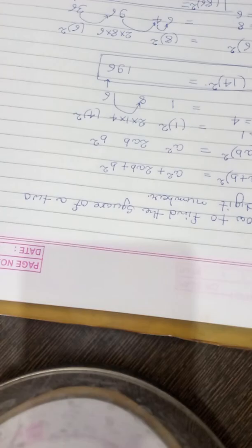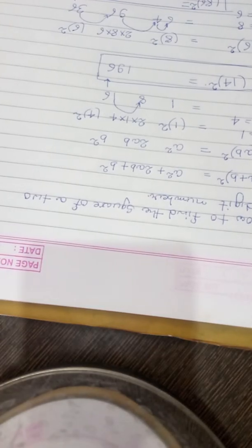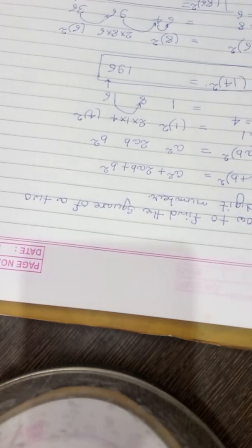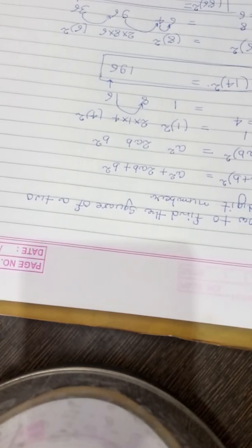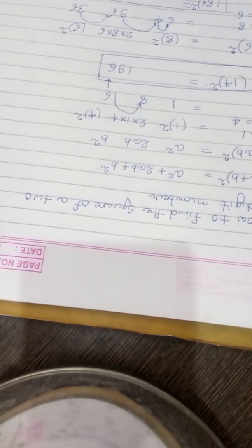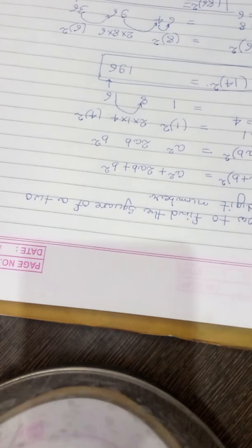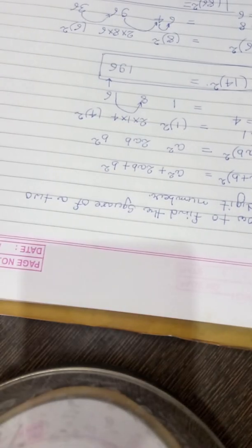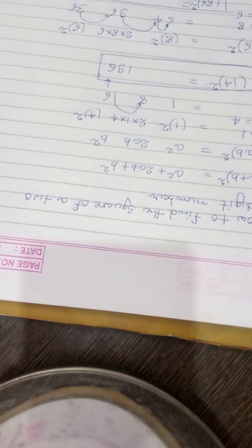So again the same way—we can write this 4. We can write this unit digit as it is. Since there is no carry, we will write 8. This 2 will add with 9, so 9 + 2 = 11, carry 1. And again this 1 with 4, so this is 5. So 72² is 5184.